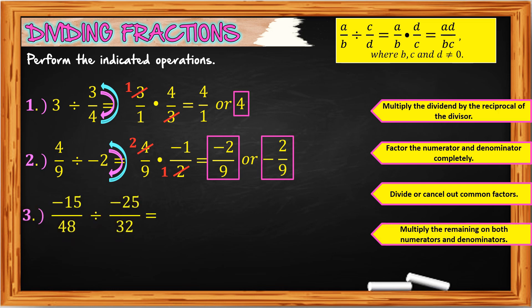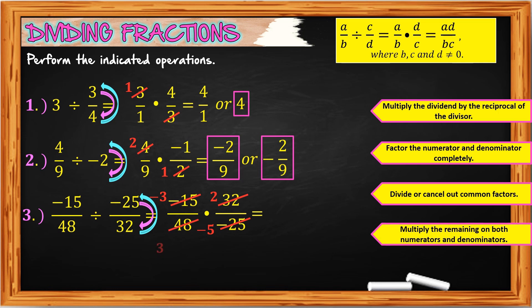For number 3, we have negative 15 over 48 divided by negative 25 over 32. First, copy the dividend negative 15 over 48, then change division to multiplication, then get the reciprocal of the divisor, which is 32 over negative 25. Then factor completely: negative 15 and negative 25 have a common factor of 5, so negative 15 divided by 5 is negative 3, and negative 25 divided by 5 is negative 5. Also, 32 and 48 have a common factor of 16: 32 divided by 16 is 2, and 48 divided by 16 is 3.